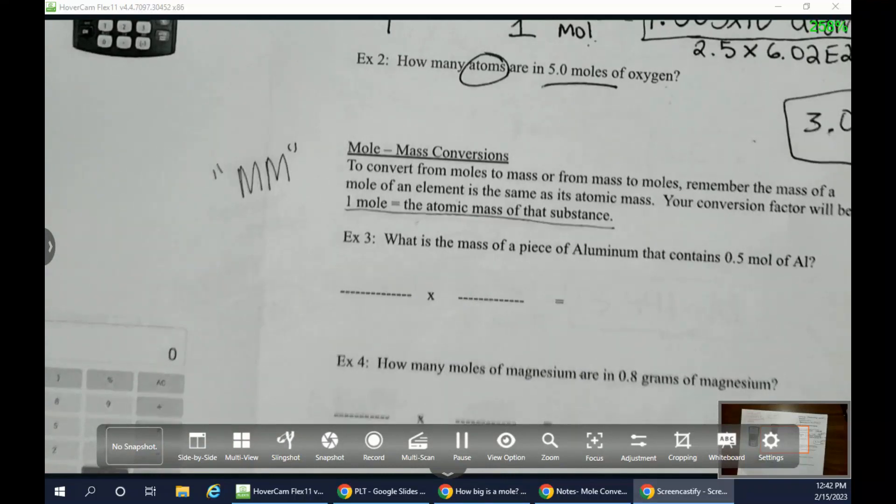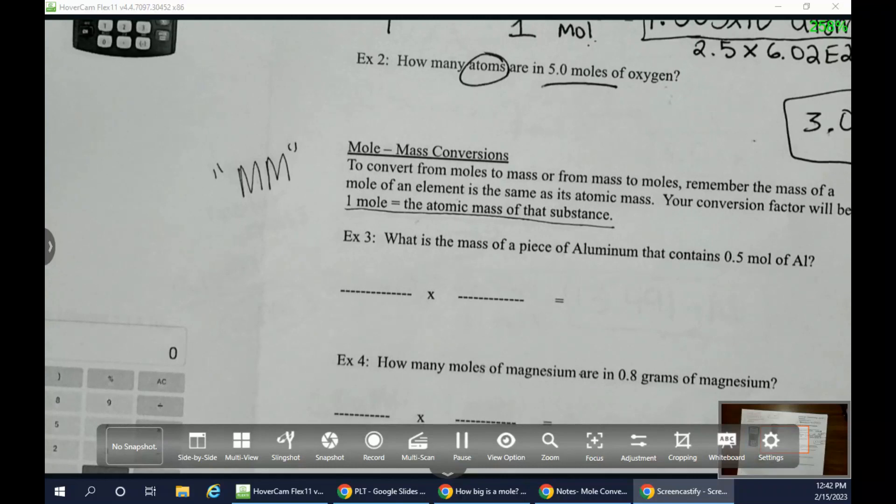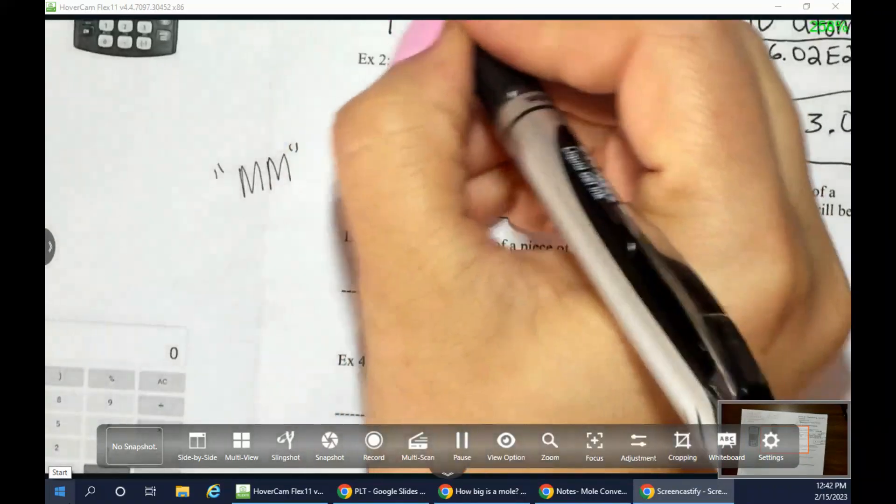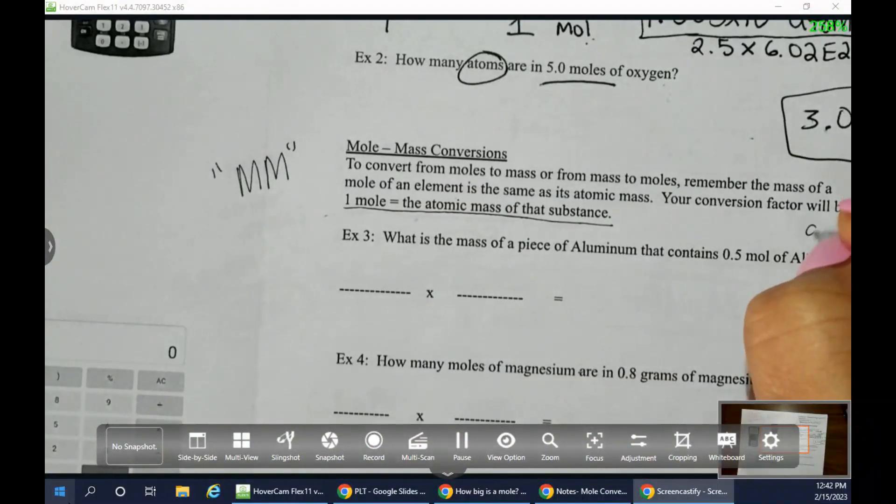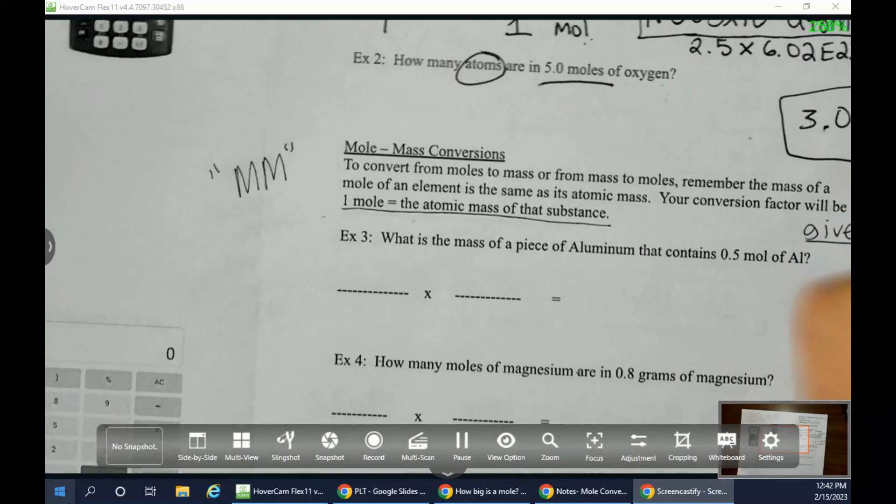So remember, the way that we did that practice was you looked at your periodic table, you added together atomic masses if you had a compound, right? And that represents one mole. So remember, we're still going to be doing, underline your given, circle what you want.